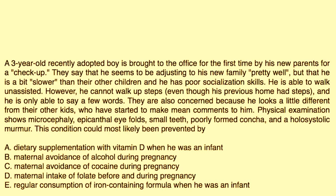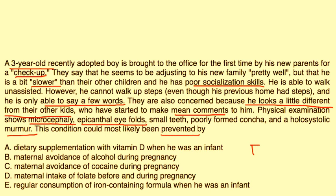Vignette one: A three-year-old recently adopted boy is brought to the office for the first time by his new parents for a checkup. He seems to be adjusting well, but is a bit slower than other children, has poor social skills, can walk unassisted but cannot walk up steps, and is only able to say a few words. Physical exam shows microcephaly, epicanthal eye folds, small teeth, poorly formed concha, and a holosystolic murmur. This condition could most likely be prevented by avoidance of alcohol during pregnancy.